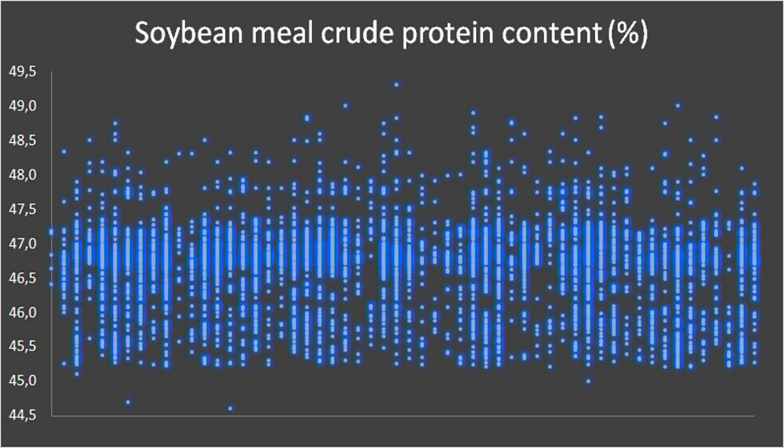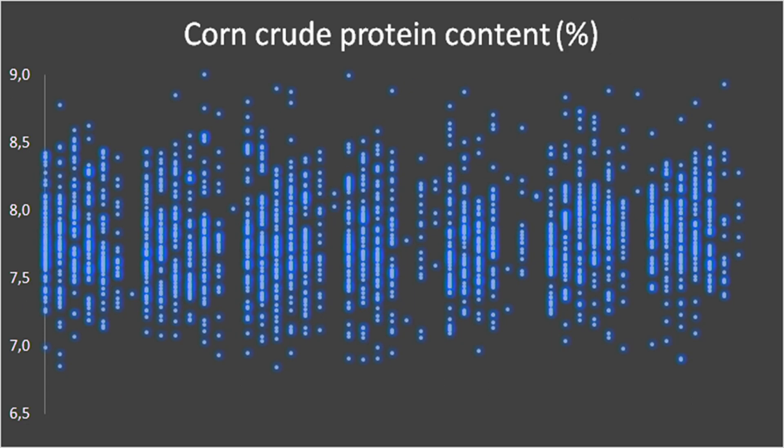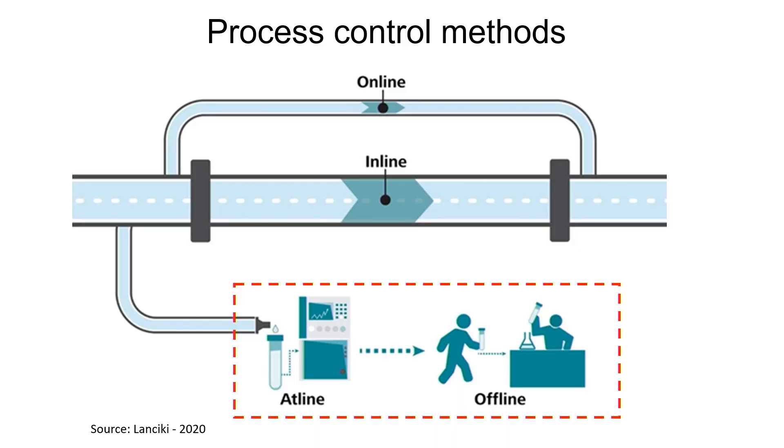Another point to consider: is there enough variability in a soybean meal-based diet to justify a rapid real-time analytical method? Looking at soybean meal crude protein arriving at the feed mill, we see quite significant variation — ranging from 45.5% up to 48.5% crude protein. That's because in Brazil we trade 46% crude protein domestically, but the export market asks for 48%, and feed mills can receive both. For corn crude protein, there is also quite significant variation, going from 7% up to 8.5%. So regarding all three points, having rapid real-time analytical methods is very important.